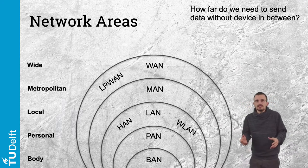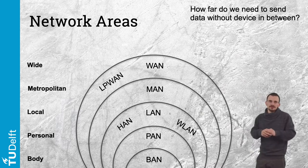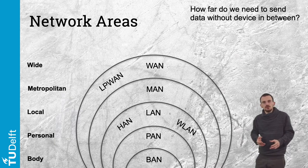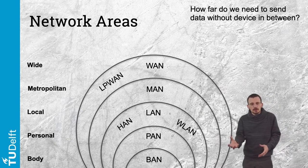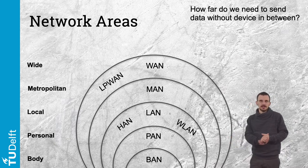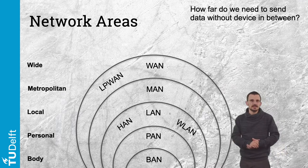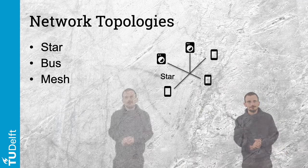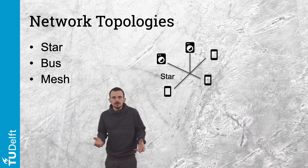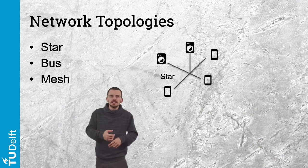Also in the wide areas, LPWAN — Low Power Wide Area Network — is specially designed for the Internet of Things, enabling resource-constrained devices to send small amounts of data over very long distances.